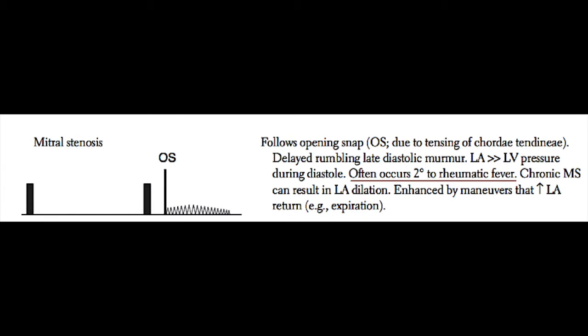Two more murmurs you should be aware of are mitral stenosis and a patent ductus arteriosus. Mitral stenosis has the characteristic opening snap, which represents the stiff mitral valve leaflets opening during diastole. The opening snap occurs immediately after S2. Mitral stenosis gives a delayed rumbling late diastolic murmur. The left atrial pressure has to be greater than the left ventricular pressure for this murmur to occur, which is why it occurs during diastole. Mitral stenosis is commonly caused by calcific disease or rheumatic heart disease.